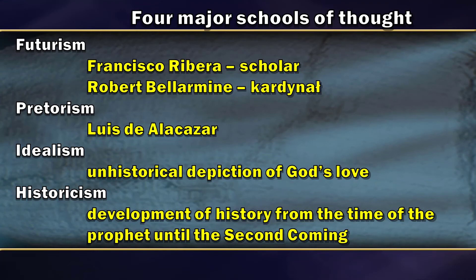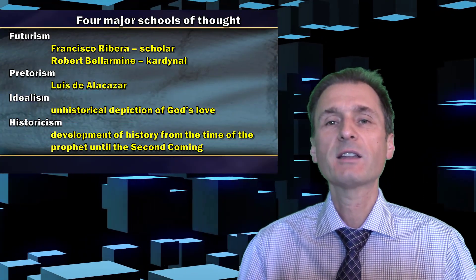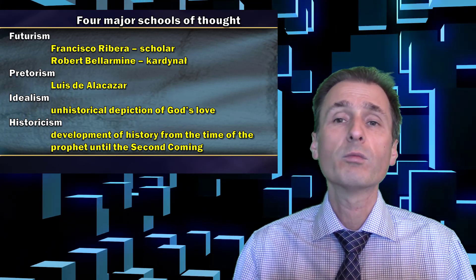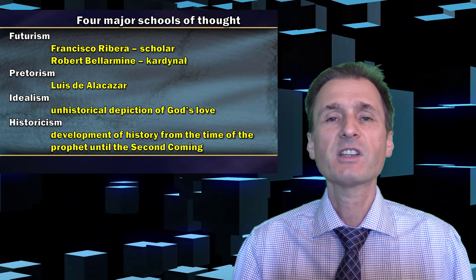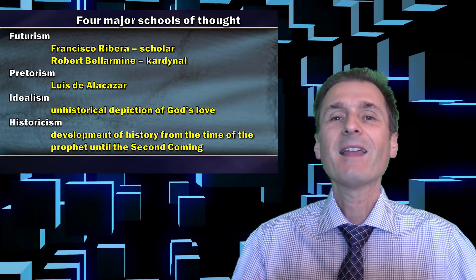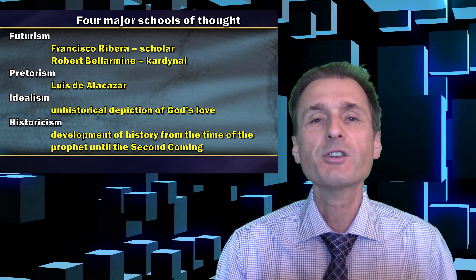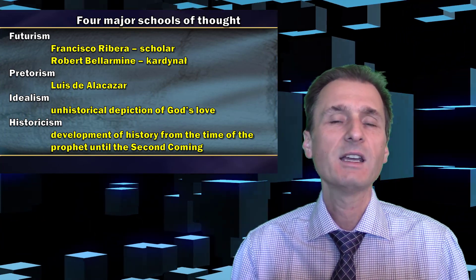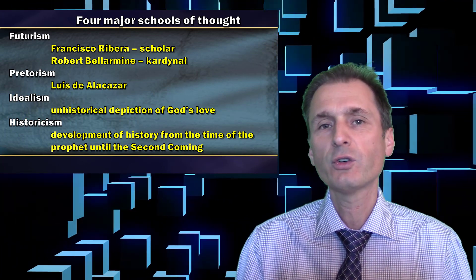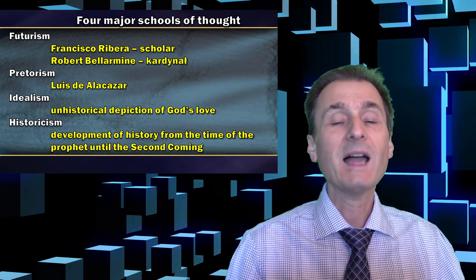Preterism does something very similar, developed by Luis de Alcazar, which simply means that all the prophecies of Daniel and Revelation have been fulfilled by 100 AD — there are no more prophecies to look at, so we simply forget it. The third school is Idealism, a more modern approach to prophecies, which states that there is no historical relation whatsoever and that all those symbols are just an expression of God's love in a poetic format — nothing to do with prophecies or what will happen in the near future.